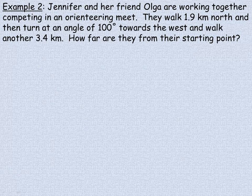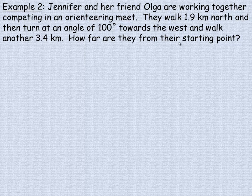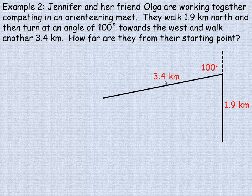One more example on the second page. Jennifer and her friend Olga are working together competing in an orienteering meet. They walk 1.9 kilometers north, so here's the 1.9 kilometers north. Then they turn at an angle of 100 degrees towards the west. So this would be straight north, so they're going at an angle of 100 degrees from there, a little bit past 90. They walk another 3.4 kilometers. The question is how far are they from their starting point?